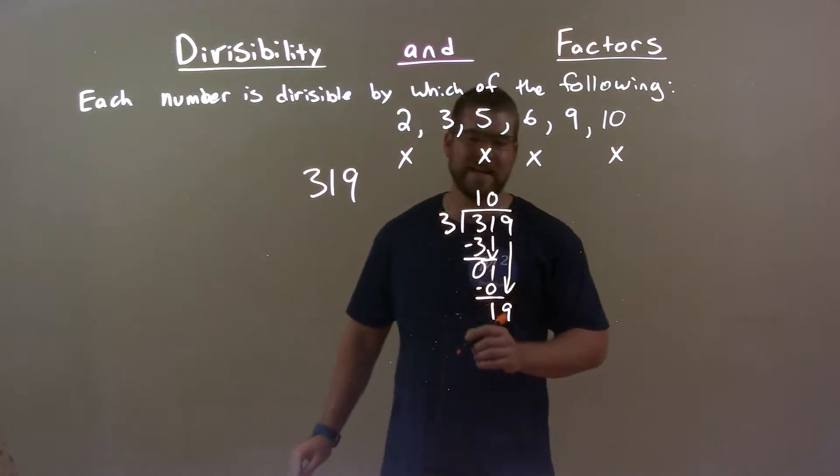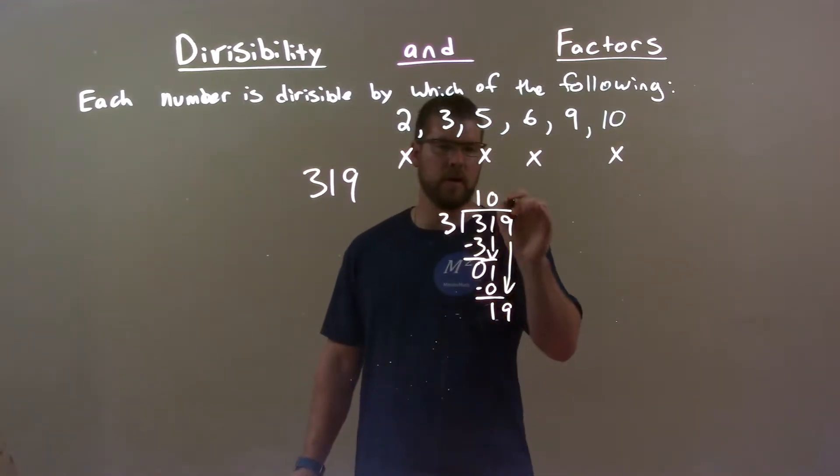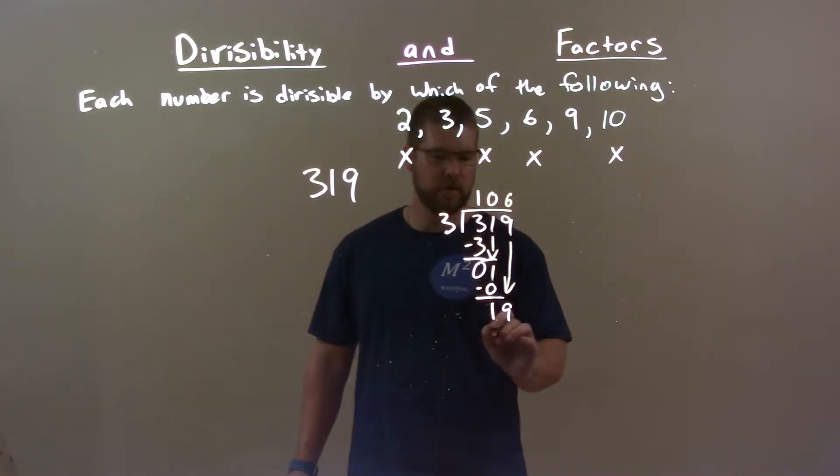Does 3 go into 19? Well, no, not evenly. 6 times 3 is 18. Subtract and we get a 1.